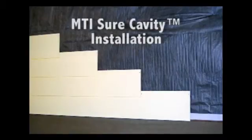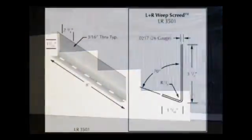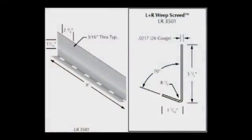Now we are going to go through the installation sequence of MTI's Sure Cavity Drainage Plane behind cladding. We start with the L&R Weep Screed from MTI.